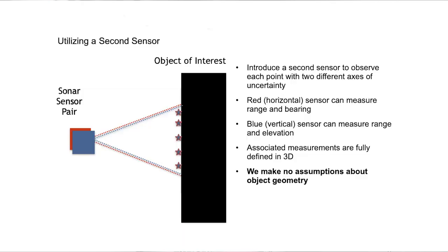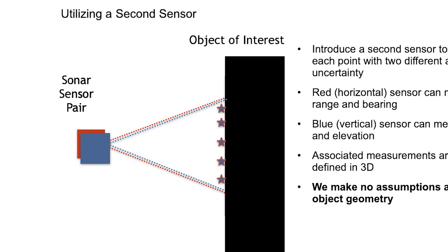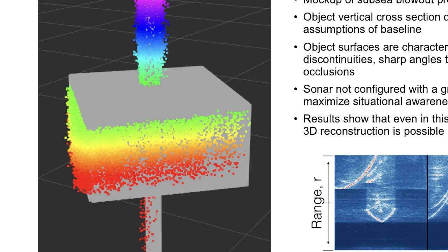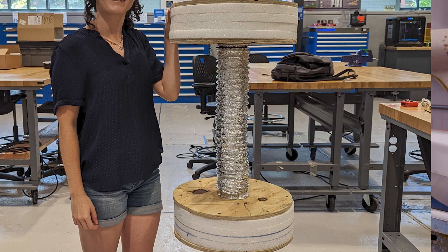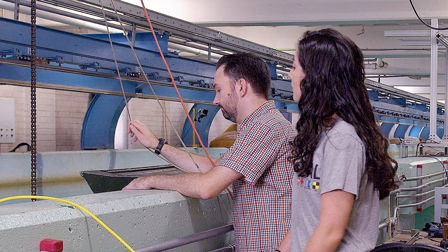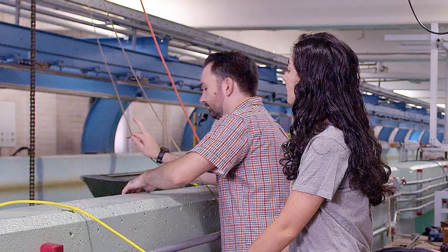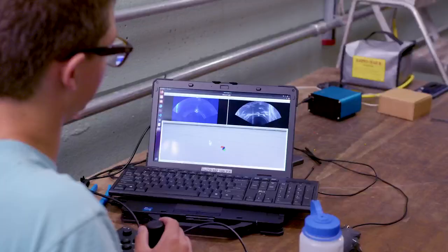It's the ability to take two different multi-beam imaging sonars, each oriented 90 degrees to the other, and fuse their images together in order to build dense 3D point clouds of underwater objects. We constructed a special object with a unique 3D geometry that would really allow us to test all the different aspects of this framework's performance. We placed that object in the tank and today we're testing our ability to build these dense 3D reconstructions in real time.